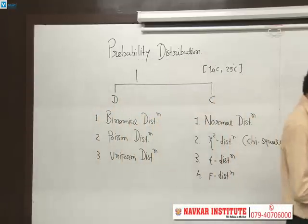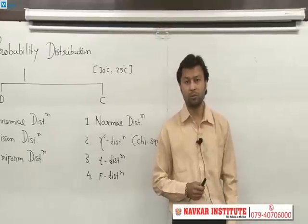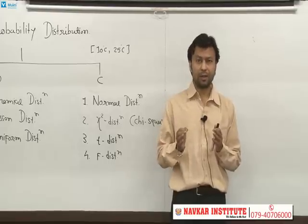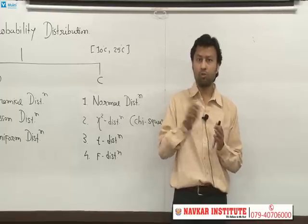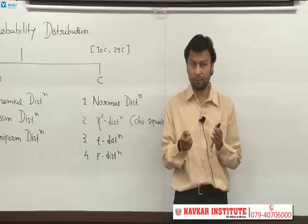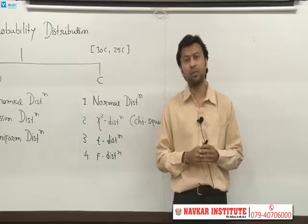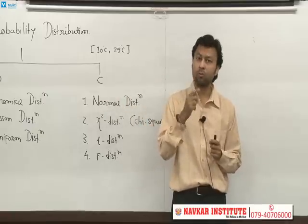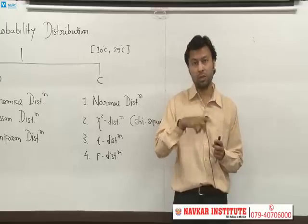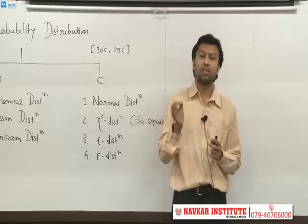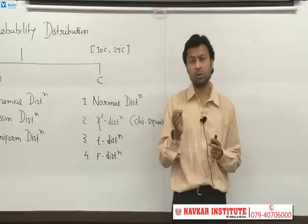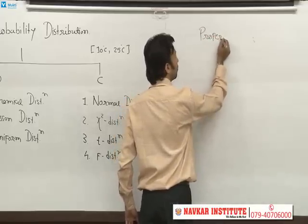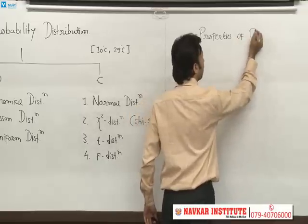Now let me discuss the properties of binomial distribution. We use binomial distribution when there are only two outcomes associated with a random experiment — either success or failure. If there are only two outcomes, then we use binomial distribution. 'Bi' means two, 'nomial' means outcomes. It was made by Bernoulli, so it is also known as Bernoulli's distribution.